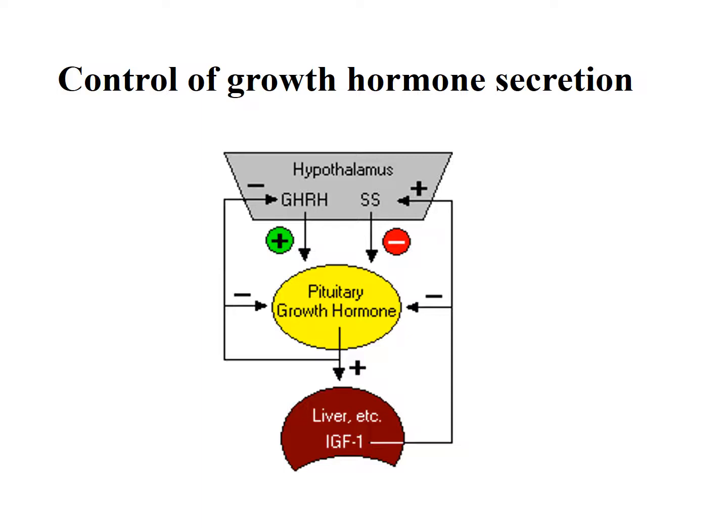Four regulatory axes govern growth hormone secretion: (1) Growth Hormone Releasing Hormone and somatostatin from the hypothalamus cause stimulation and inhibition of growth hormone from the anterior pituitary, respectively. (2) Growth hormone acts on the anterior pituitary causing decreased GH secretion. (3) IGF-1 action on the pituitary decreases GH secretion. (4) IGF-1 action on the hypothalamus — by stimulating somatostatin and inhibiting GHRH — eventually inhibits GH secretion from the pituitary.